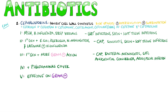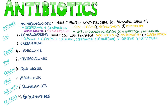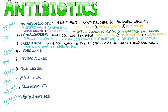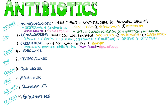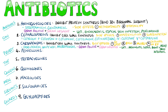Fourth generation cephalosporins have pseudomonas cover, while fifth generation is effective against gram-positive bacteria and broad spectrum against gram-negative. The carbapenems — examples include doripenem, imipenem, and meropenem — also inhibit cell wall synthesis but are mostly used as last-line agents due to their ability to inhibit beta-lactamase. They cover gram-positive, gram-negative, and anaerobic bacteria but do not cover MRSA. Side effects include GI distress, rash, allergies, and seizures in patients with renal dysfunction. Indications include UTIs, meningitis, sepsis, bone, intra-abdominal and pelvic infections, ventilator-associated pneumonia, and complicated skin infections.